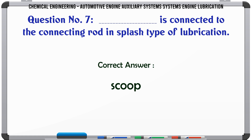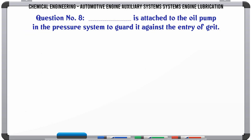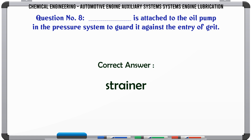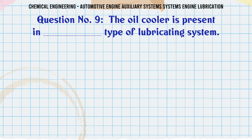What is attached to the oil pump in the pressure system to guard it against the entry of grit? a) oil pan, b) strainer, c) oil pump, d) pressure gauge. The correct answer is strainer.